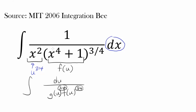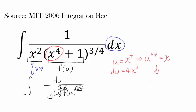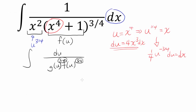Why don't we try letting u equal x to the fourth, since we have that in the denominator to begin with. Then du is 4x cubed, and we know u to the one-fourth power is x. Let's differentiate that: differentiating u to the one-fourth gives us one-fourth times u to the negative three-fourths du equals dx. Why don't we try going with this and see where that takes us.